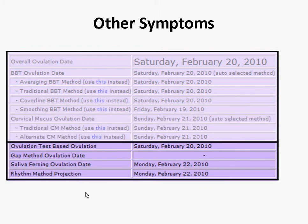Other symptoms appear at the bottom of this chart and include ovulation testing, the gap method, saliva ferning, and the rhythm method. Ovulation dates for these may also be produced. They do not use different techniques — they're just different ovulation estimates for these different symptoms.